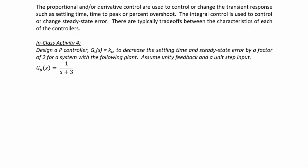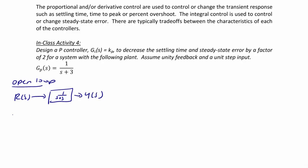Let's look at open loop control, which means there's no feedback. We have an input R(S), it goes through the plant 1 over S plus 3, and we have an output Y(S). For an open loop system, the settling time would be 4 over 3 seconds, because this would be E to the minus 3T, so tau is one third. The steady state error ESS would be 1 minus GP(0), so the steady state error would be 2 thirds.